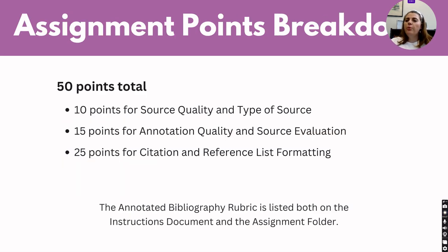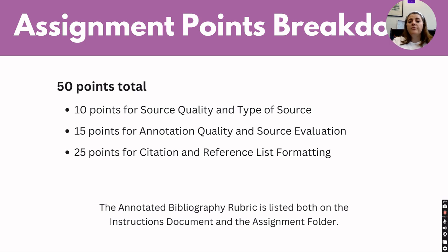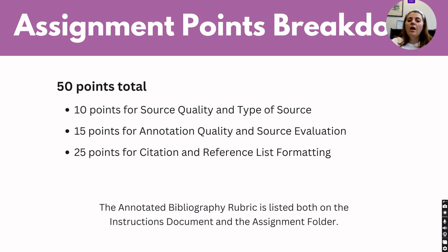For the assignment points breakdown, it's 50 points in total. 10 points will go to the source quality and type of source, 15 points for the annotation quality in the source evaluation, and 25 points for the citation and reference list formatting. Please note that a full rubric is listed both under the instructions document and within the assignments folder.